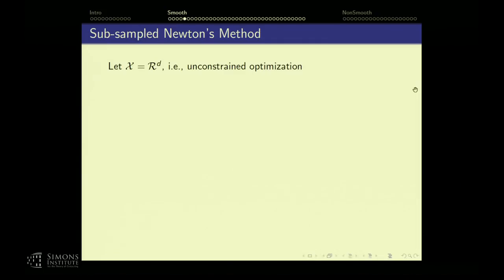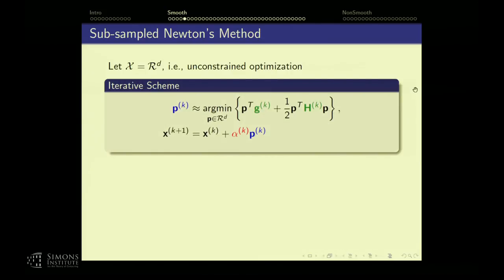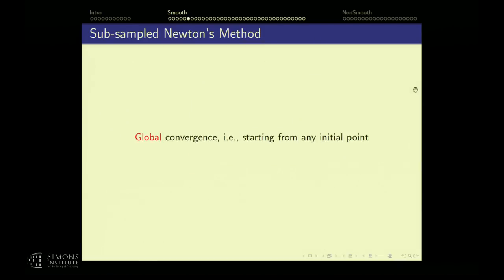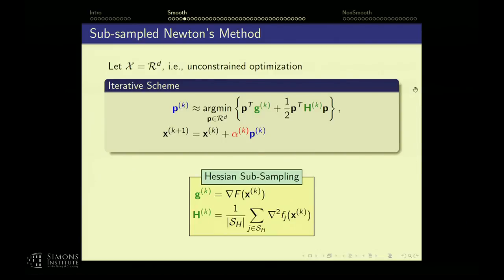For unconstrained problems, the iterations are: find a direction that minimizes the quadratic approximation, and take a step along it. I put the full gradient and the subsampled Hessian. The direction requires solving a linear system involving H and minus the gradient. The step size uses the Armijo line search: find alpha such that moving along that direction decreases the objective by at least a certain fraction of the linear approximation — this inner product must be negative to be a valid descent direction.